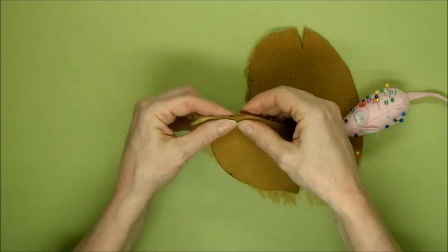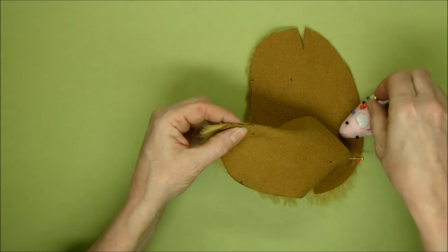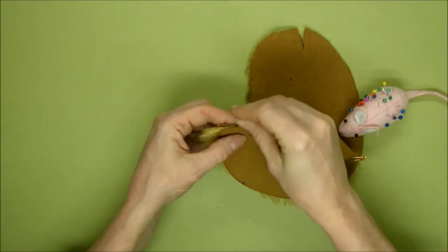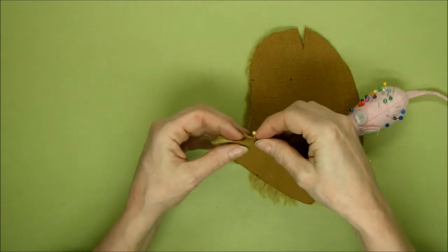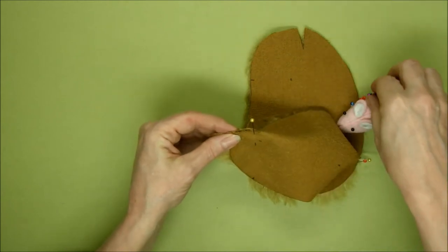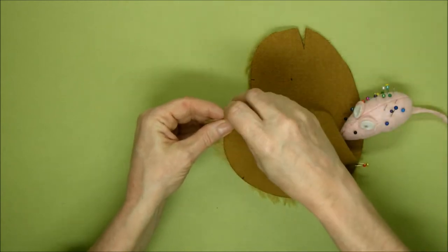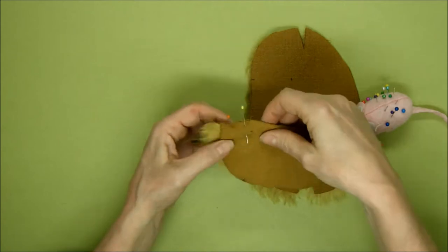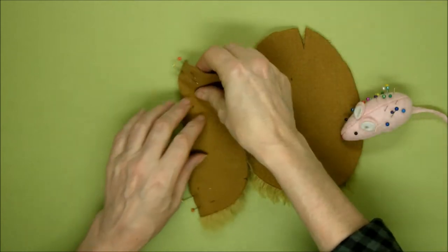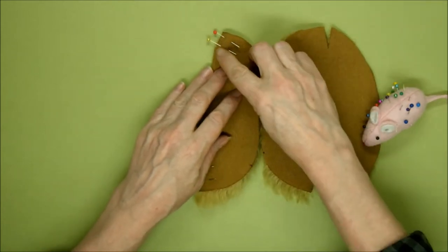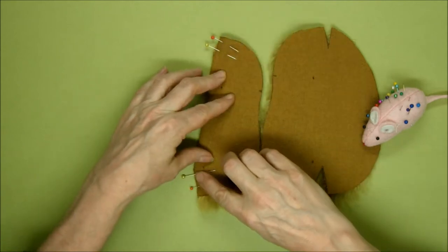Once you've tucked that pile in and pinned it in place, you need to find yourself a thread that matches the backing of your fabric. We're going to sew these two darts and of course repeat that on the second body part along here at the top and along here at the bottom.